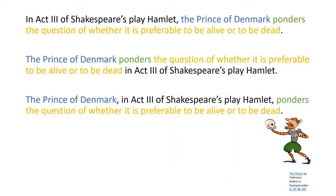As sentences get longer and more complex, it becomes increasingly important to use SVO structure as a way of clarifying the sentence's basic elements. For example: 'In Act 3 of Shakespeare's play Hamlet, the Prince of Denmark ponders the question of whether it is preferable to be alive or to be dead.' This sentence begins with a prepositional phrase, then follows a clear subject-verb-object structure. We can preserve the SVO structure by moving the introductory element to the end: 'The Prince of Denmark ponders the question of whether it is preferable to be alive or to be dead in Act 3 of Shakespeare's play Hamlet.'